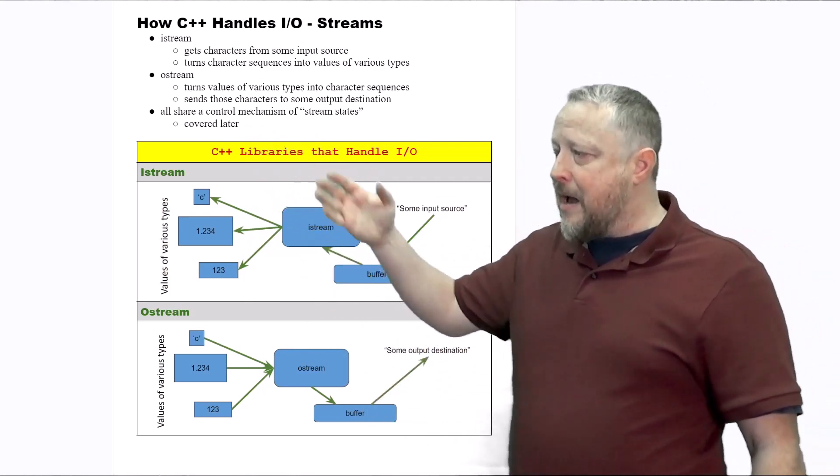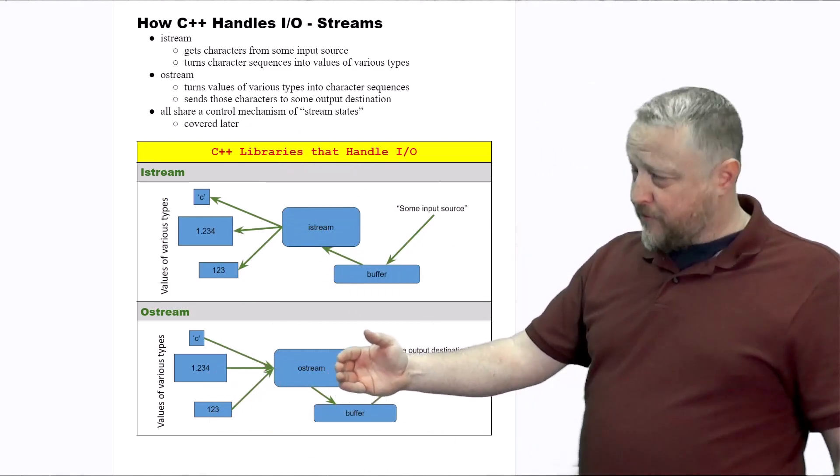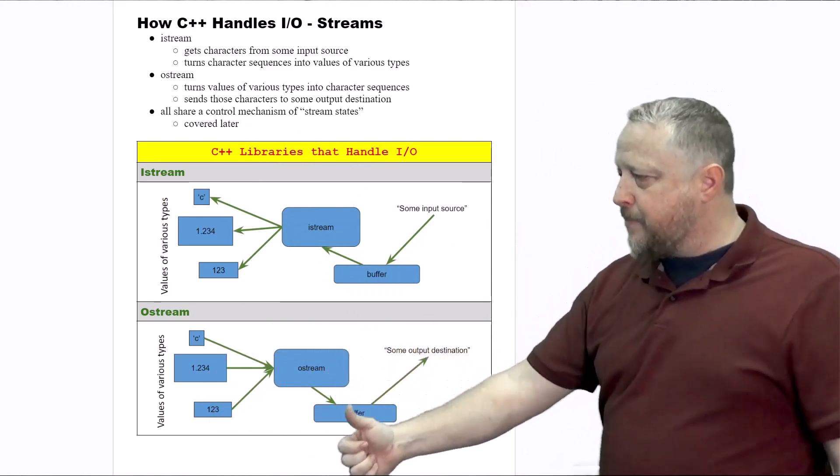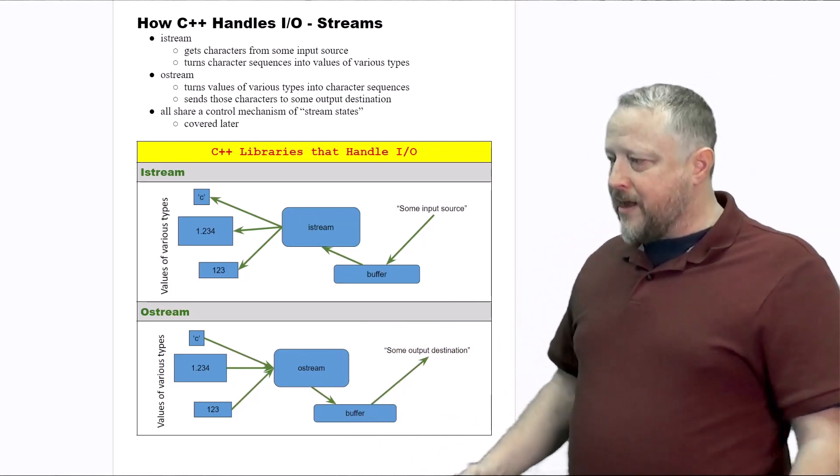Then oStream is just the opposite. It converts all of those different types using oStream, puts them back into the buffer, and then sends it out to the destination source where we want to save all of that data.